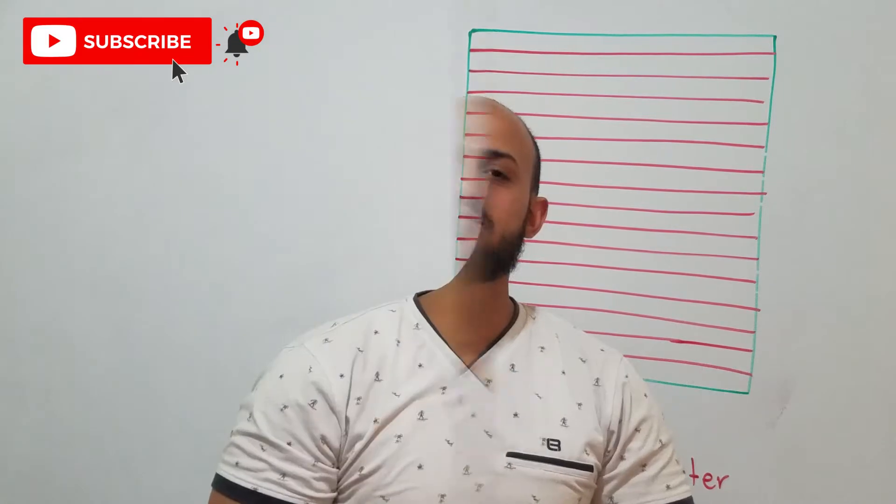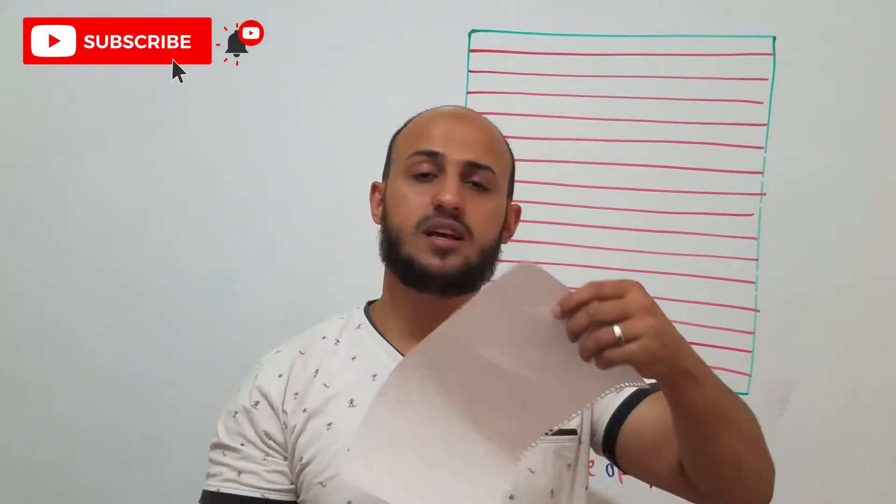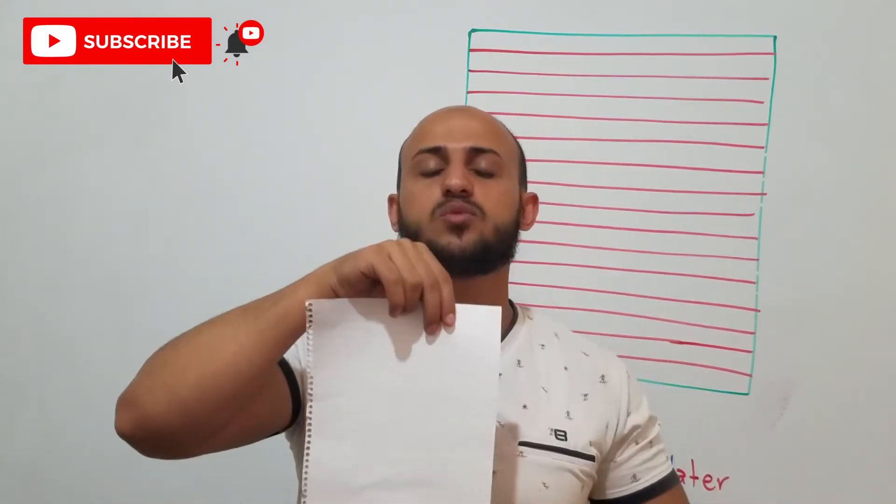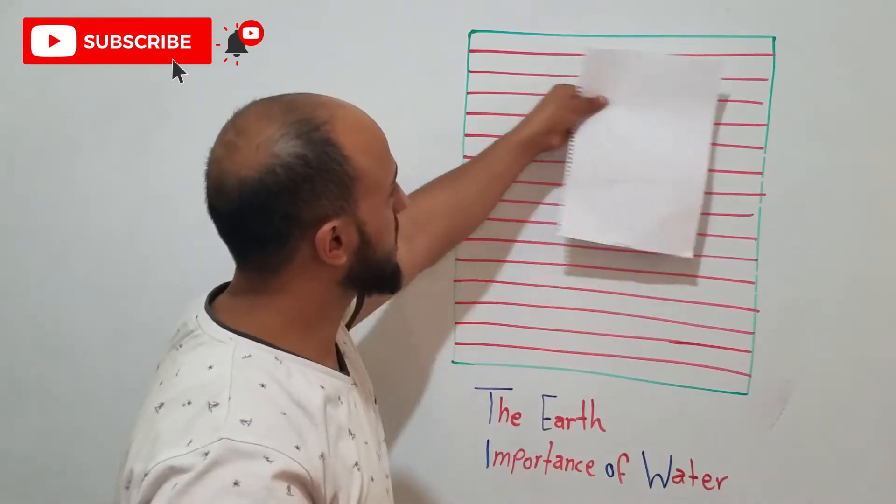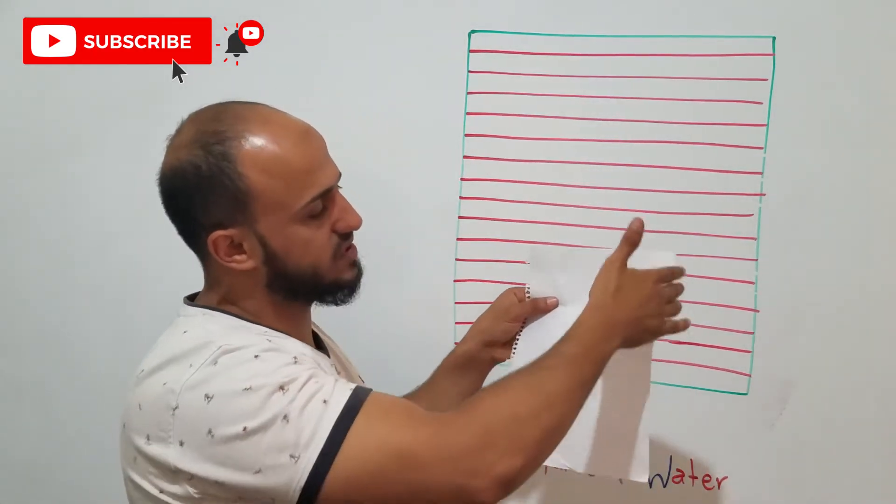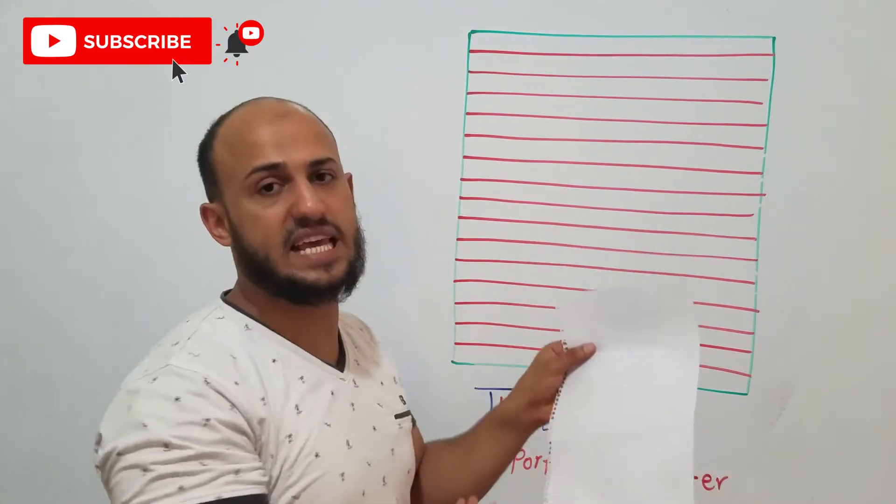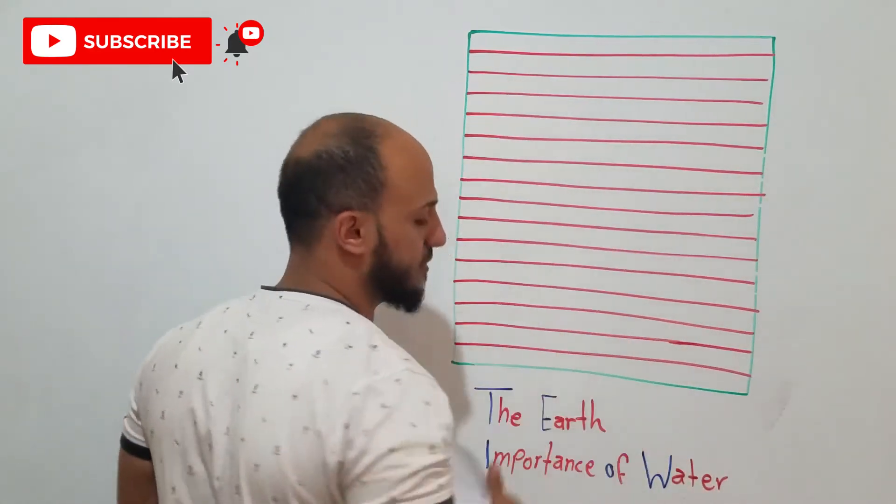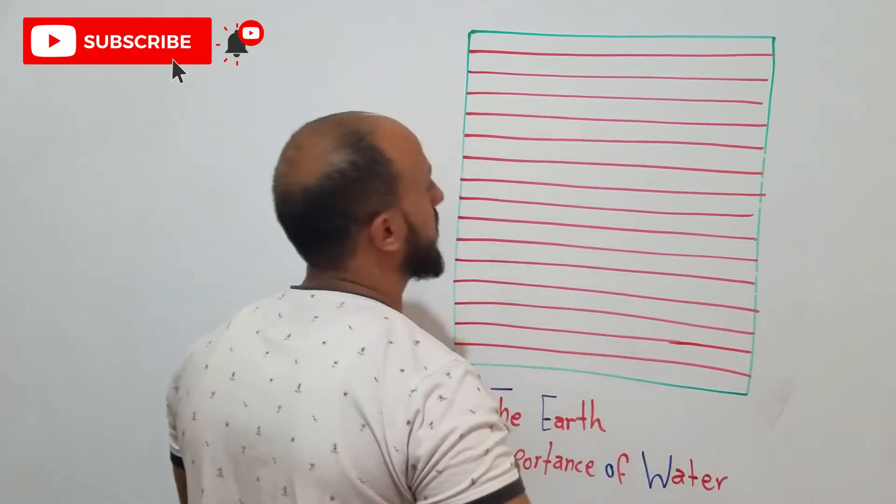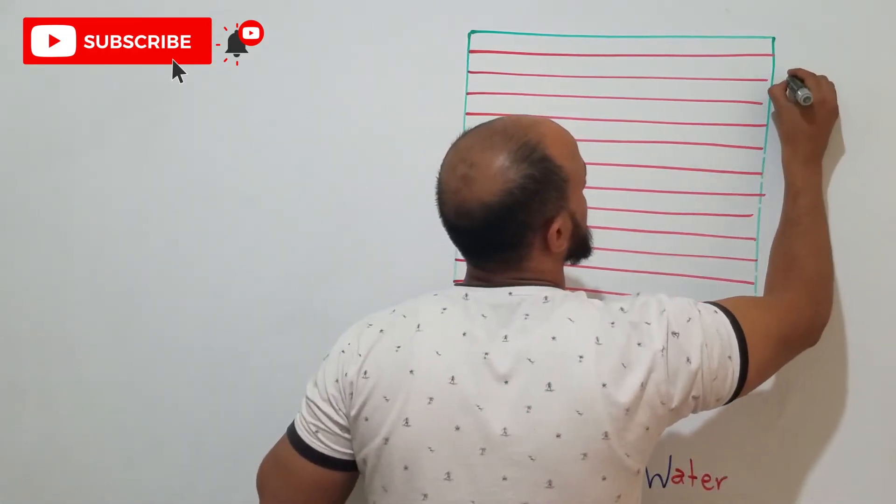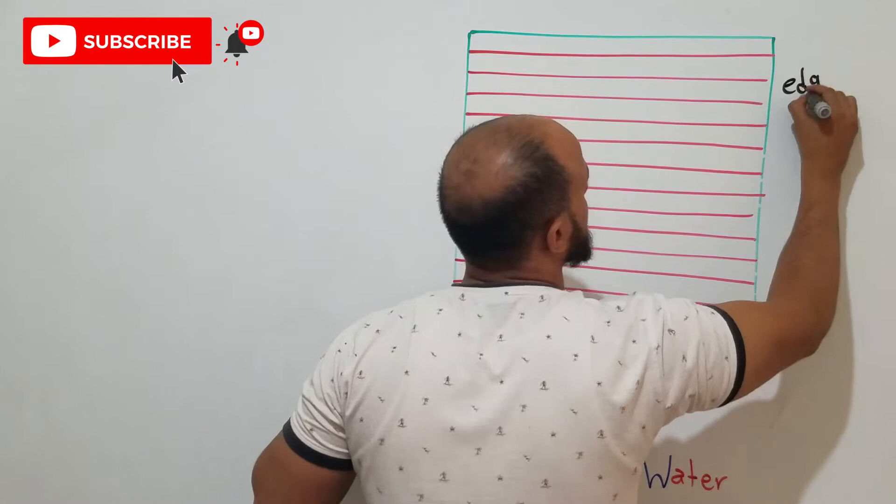We're back to writing now. So for example, I have this paper, so how I prepared it to write on it. First, let's imagine this is the paper and this, this one, we call it edge. So it is the green, the green line, we call it edge.